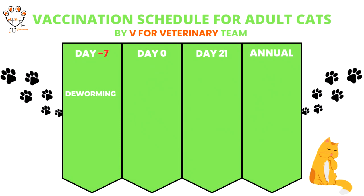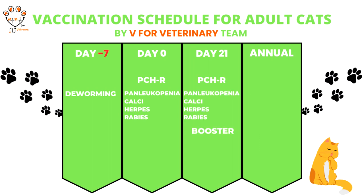If you have an adult cat with no vaccination history, then you have to deworm your cat one week before vaccination. One week after deworming, give the first dose of PCH plus rabies. Two to four weeks apart, give another booster of PCH plus rabies. Then give annual doses of PCH plus rabies. Like, share, and subscribe to my YouTube channel to see more videos like this. Thank you so much.